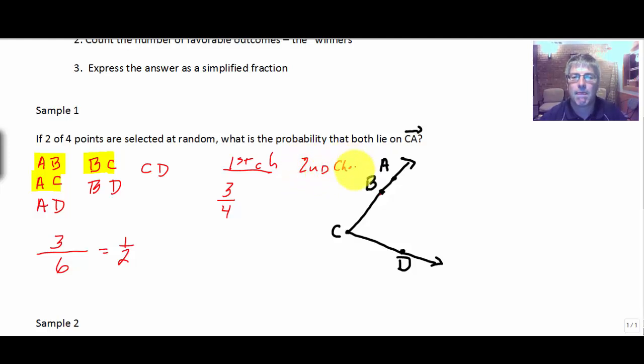We assume one of them was successful. And then in our second choice, well, if one of them was successful, we only have a two out of three chance of that happening. Because remember I took one of my possibilities away, so I only have three points left. So I have two out of the three would lie on C, A if I was successful choosing either A, B, or C the first time. Then we multiply those two together. So first choice and second choice, we multiply that together and we get six out of 12, which simplifies to one half.